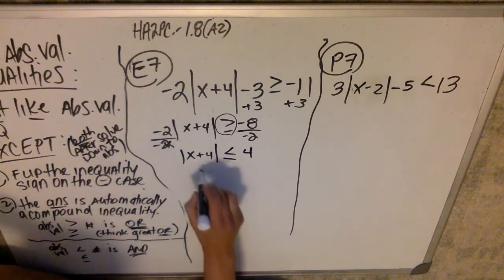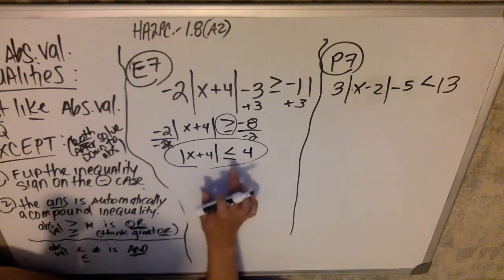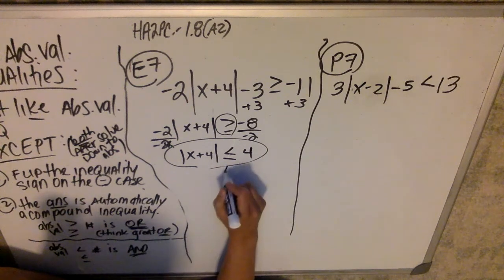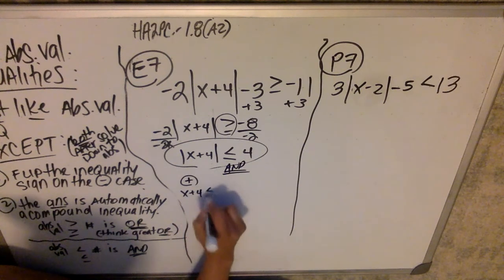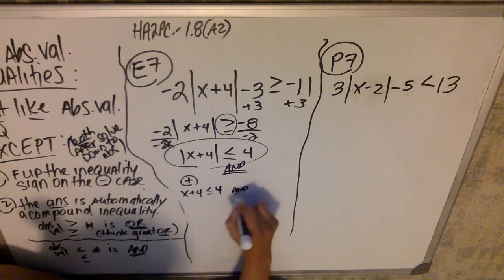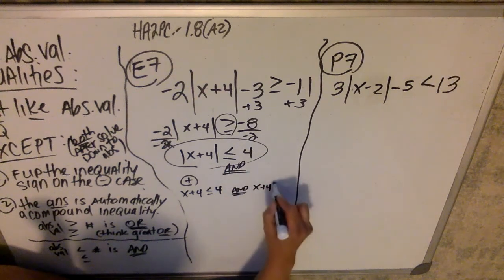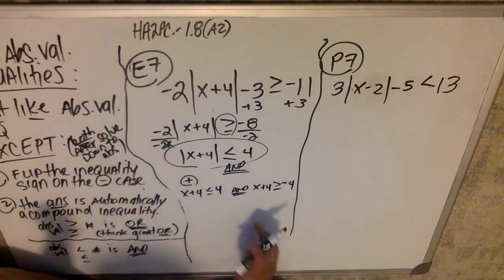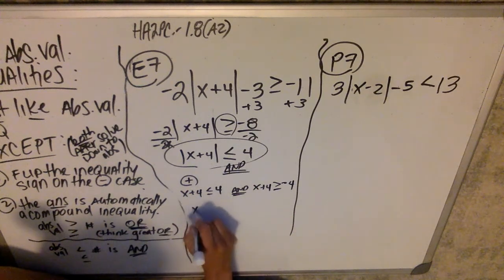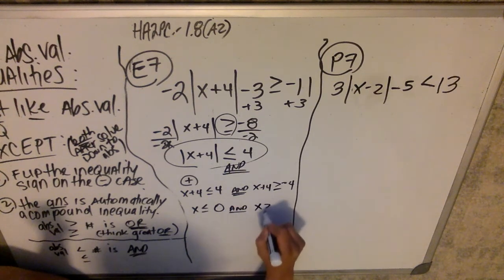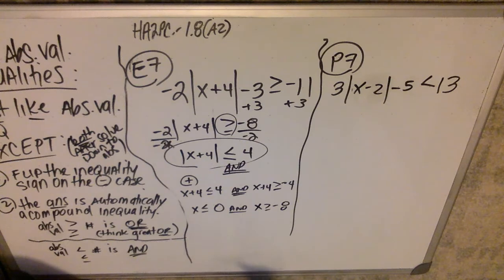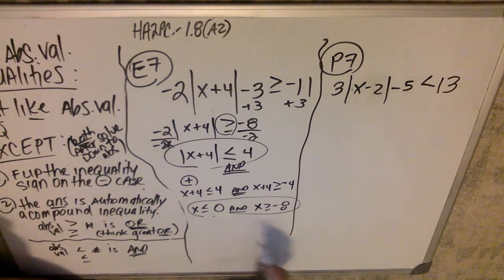Now I can worry about whether this is less than or greater than. This is less than, so it's an 'and' — because 'great-or' means less than must be 'and'. Positive case: x plus four is less than or equal to four. Negative case: x plus four is greater than or equal to negative four — I flip the direction of the sign. Solving: x is less than or equal to zero, and x is greater than or equal to negative eight. Because it's 'and', I can also write this as a chain inequality.